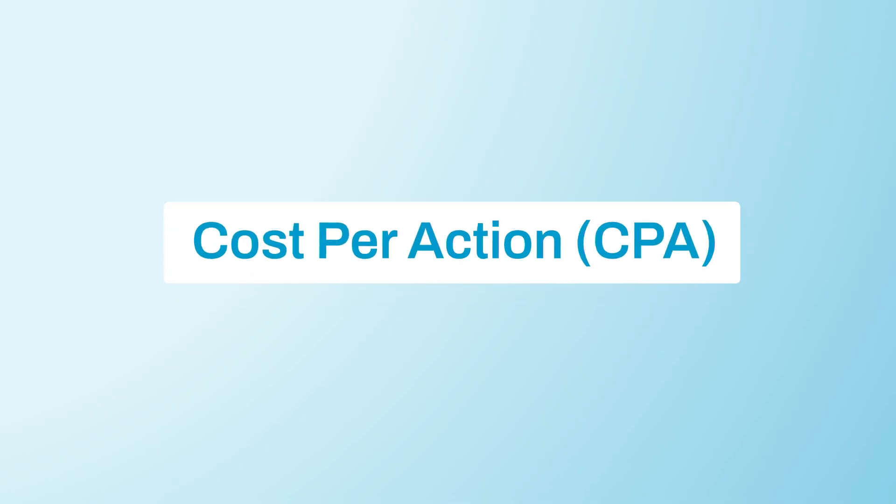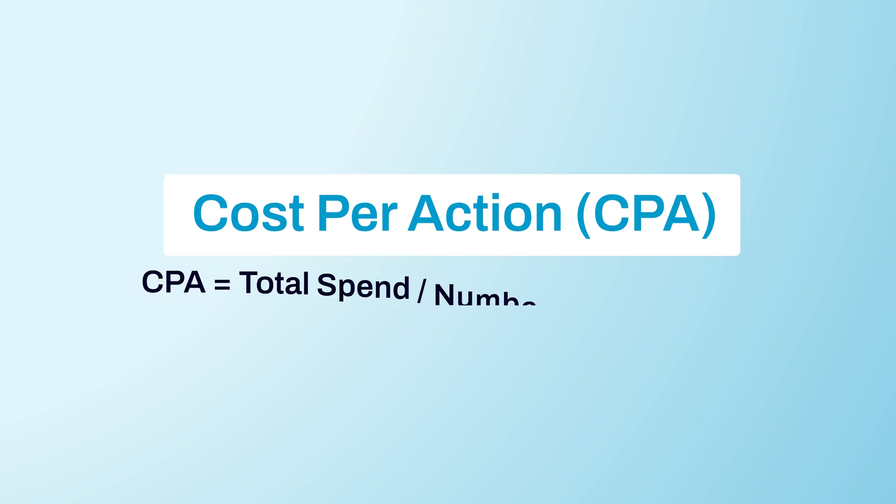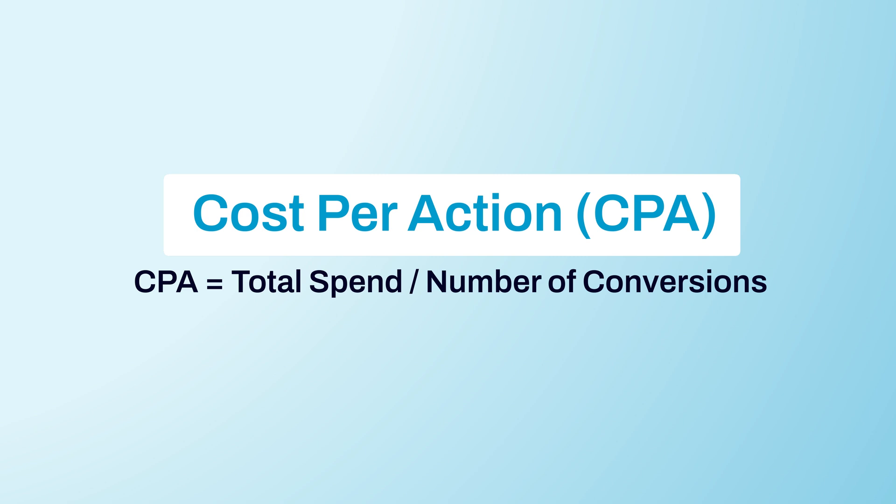The next metric is CPA, cost per action, or cost per conversion as it's sometimes called. It tells you how much you've spent on average to score a predefined conversion, be it a landing page visit, a sign-up, or any other business-specific goal. Keeping track of it helps you estimate the profitability of your ad campaigns. It also helps you optimize campaigns and refine targeting, finding the sweet spot that guarantees a good volume at a decent cost.